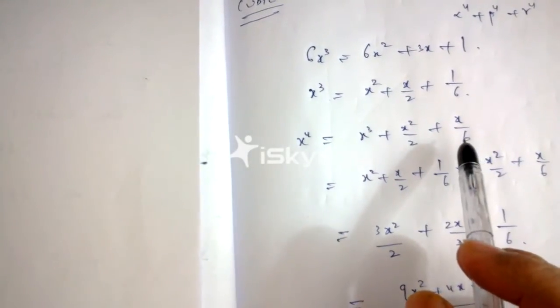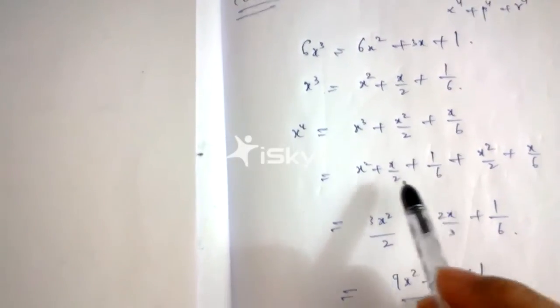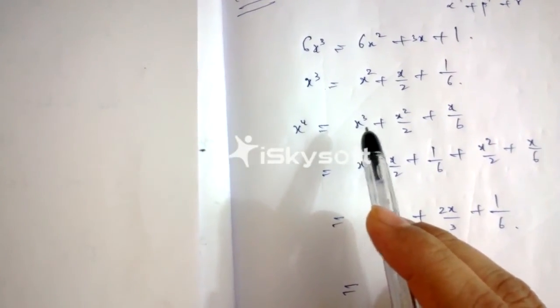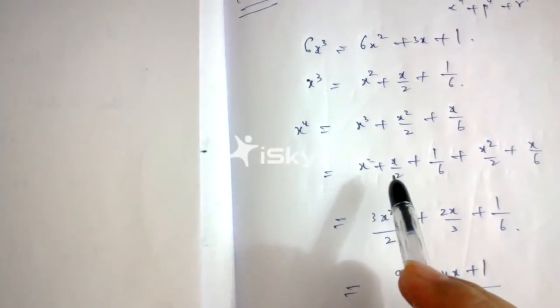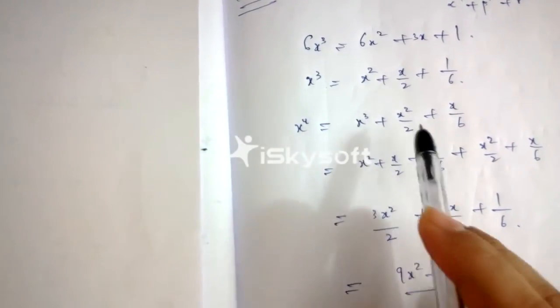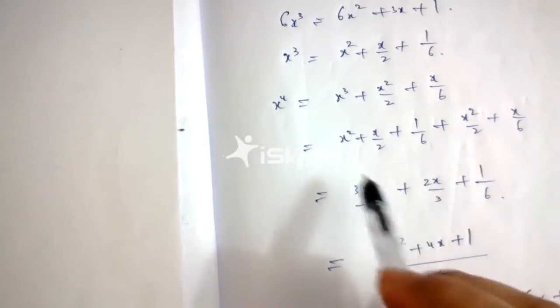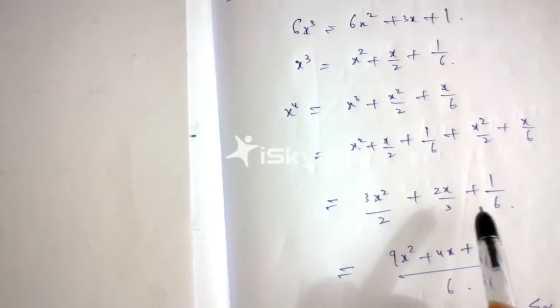So I'll get x⁴ = x³ + x²/2 + x/6. Now replace x³ again with the expression x² + x/2 + 1/6, plus x²/2 + x/6. Simplifying, you'll get 3x²/2 + 2x/3 + 1/6, which further simplifies to (9x² + 4x + 1) / 6.